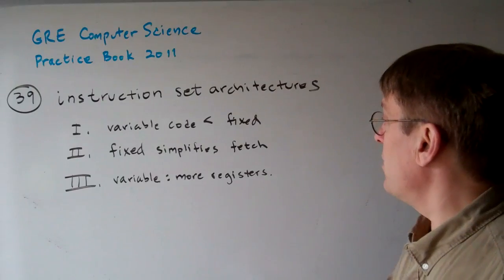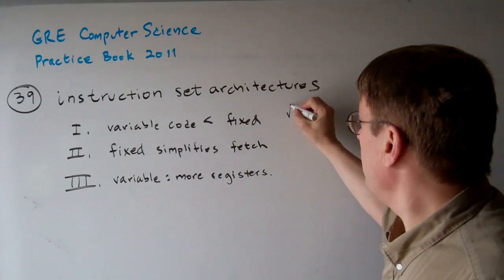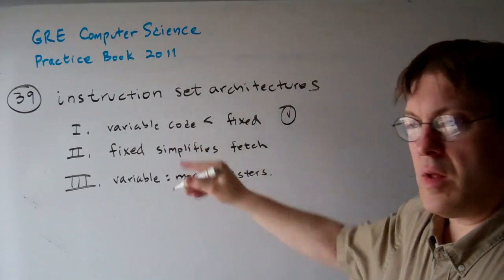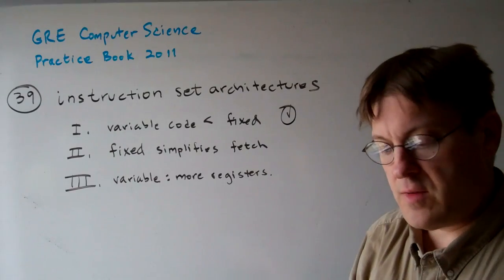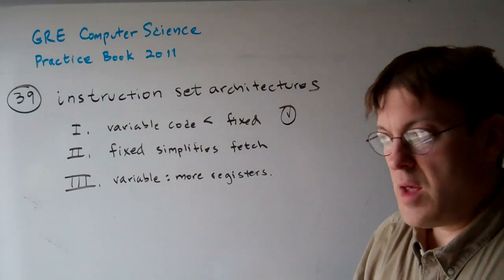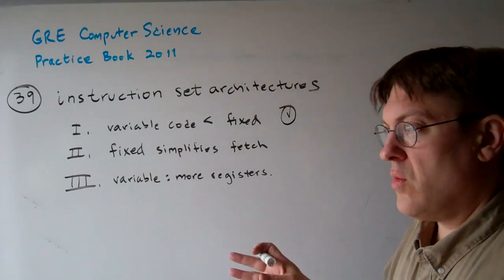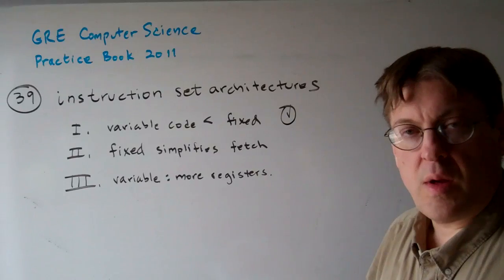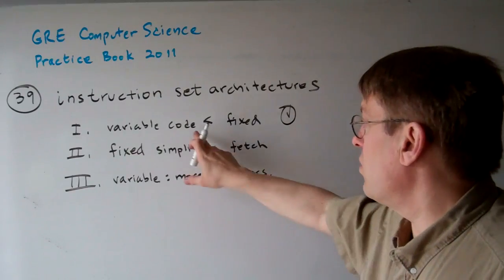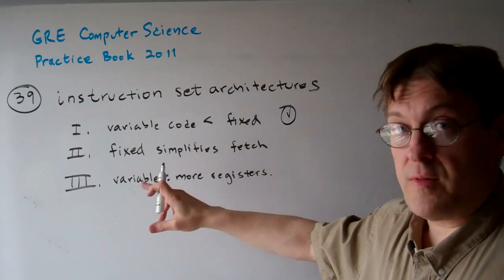Basically, the bottom line is yes. Number one is yes, variable length ISAs do allow for smaller code size. Because you can work with the space that you have available, you can reduce the code size quite a bit. That was the purpose of variable length.